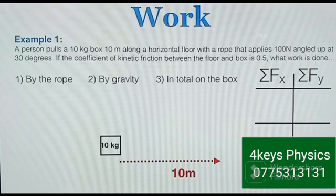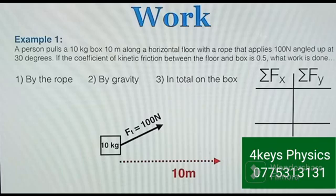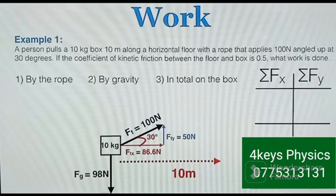A person pulls a 10 kg box 10 meters along a horizontal floor with a rope applying 100 N at 30° above horizontal. The coefficient of friction between floor and box is 0.5. We want to find: (1) work done by the rope, (2) work done by gravity, and (3) total work done on the box. Drawing the force diagram: the rope's horizontal component is 100·cos30° = 86.6 N and the vertical component is 100·sin30° = 50 N. The force of gravity is mg = 98 N acting downward.